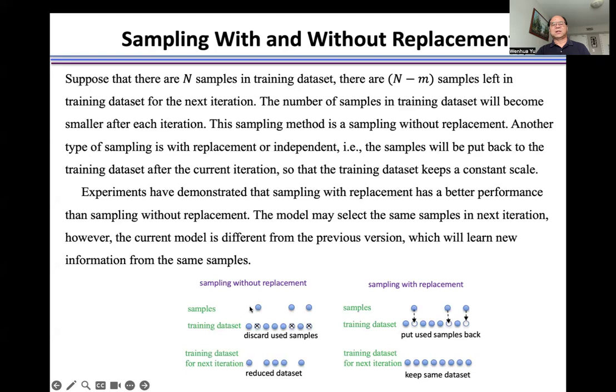For example, these samples are selected from the training dataset. For sampling without replacement, for the next iteration, the training dataset contains a smaller number of samples.